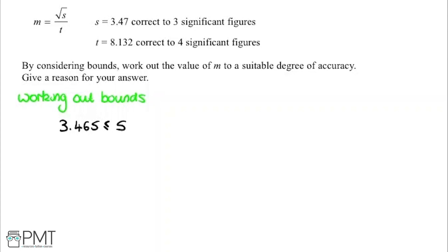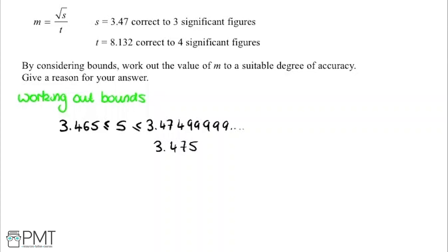So s is greater than or equal to 3.465. If it equals this value and we go to three significant figures, we get the value we want. For the upper bound, the highest value that still rounds to 3.47 at three significant figures would be 3.4749999... Any higher — if we had 3.475 and rounded to three significant figures, that would give us 3.48, which isn't what we want. So we write this as s is greater than or equal to 3.465 and strictly less than 3.475.